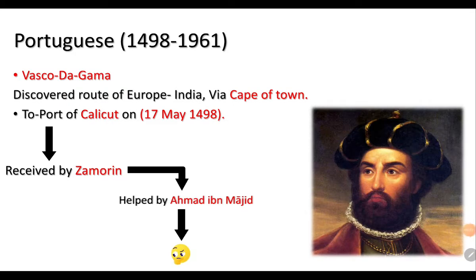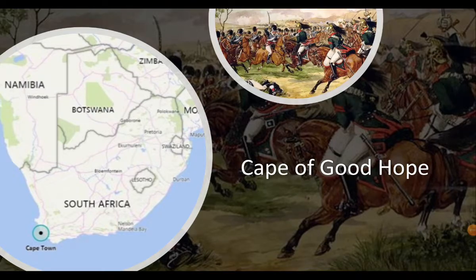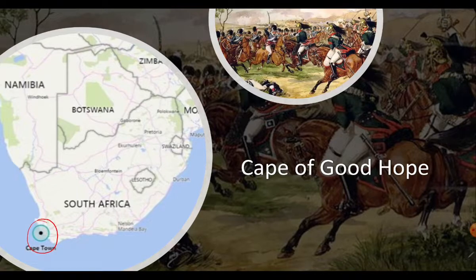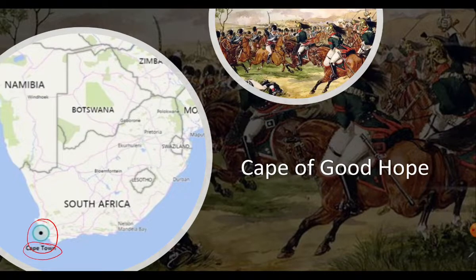Here we can see Vasco da Gama, and now the Cape of Good Hope. This is Cape Town, which is also known as the Cape of Good Hope, located in South Africa.